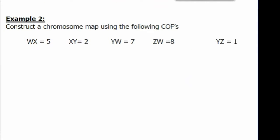Okay, this is another way to write the distance between the genes. So W and X are 5 apart. X and Y are 2 apart. Y and W are 7 apart. And let's start with Z and W are 8 apart. So we'll place Z on 0 and W on 8.